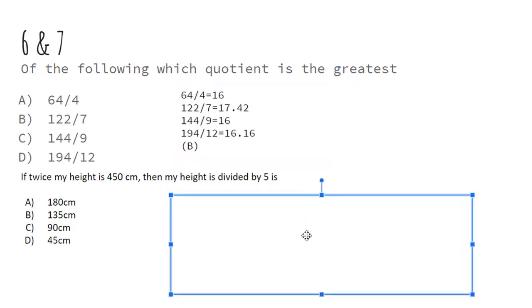Now for the second one: if twice my height is 450 centimeters, then my height divided by 5 is... So twice my height is 450, so 450 divided by 2 is your actual height. And you have to divide that by 5 and you would get 45.